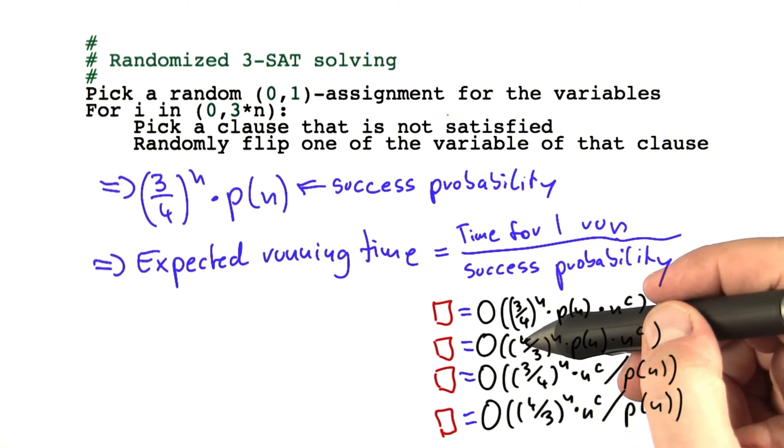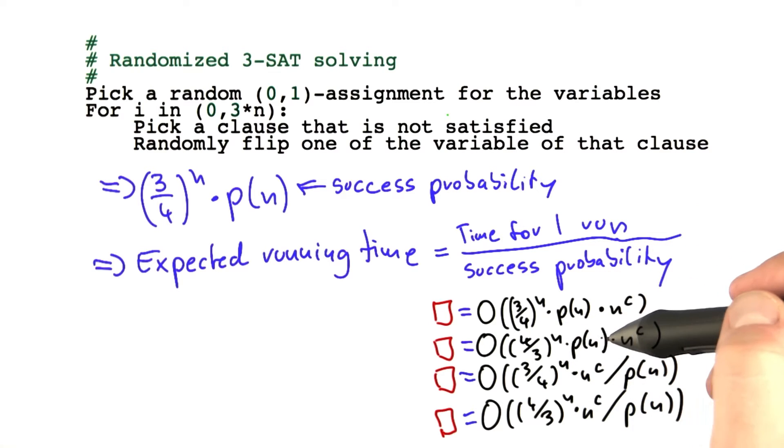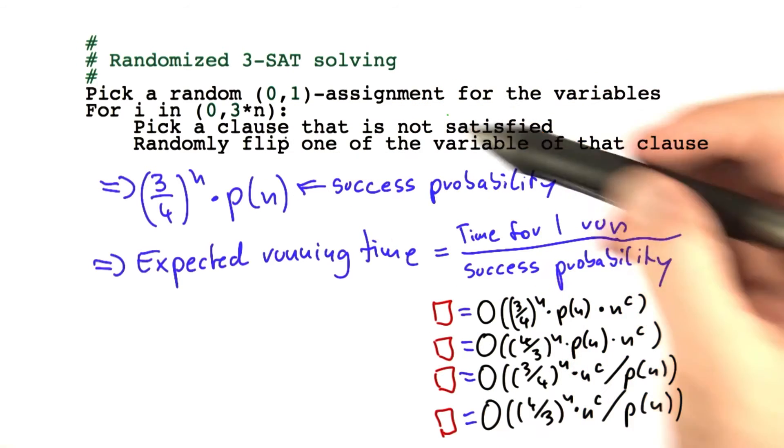Or is it O of four-thirds to the power of n times the polynomial of n times the time required for this algorithm here?